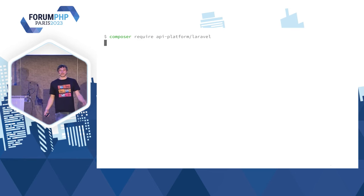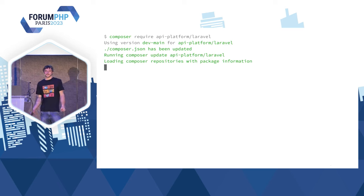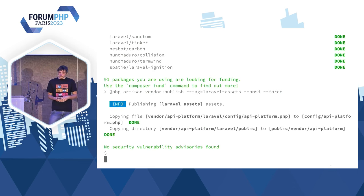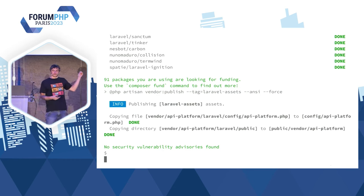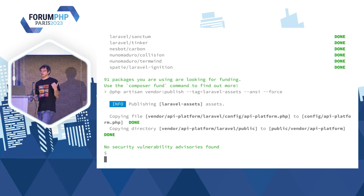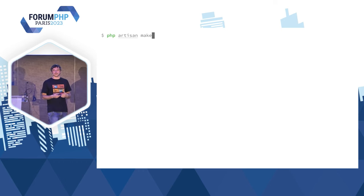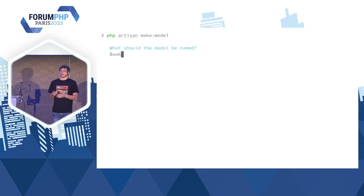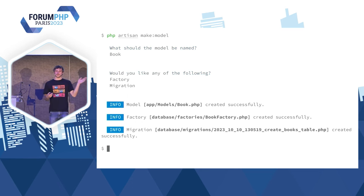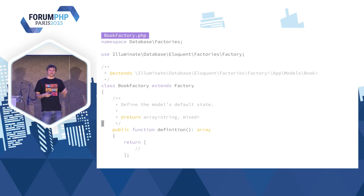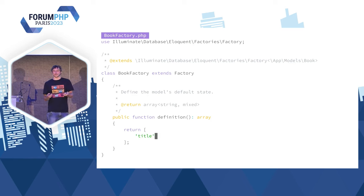Première étape : on require le composant API Platform Laravel, ce qui va venir nous installer ce dont je vais vous parler tout à l'heure. Une fois qu'on a installé le composant, on va venir copier les fichiers de configuration requis et aussi un dossier public dans les assets. Suite à ça, on va faire un peu de Laravel ici — je vais utiliser le maker de Laravel pour créer un nouveau modèle, ici un modèle de livre. Je vais générer une factory et une migration.